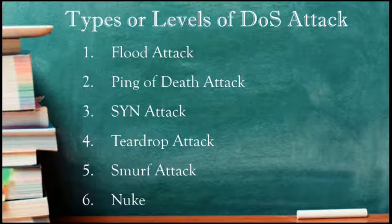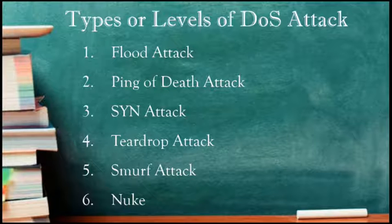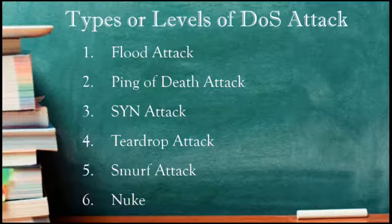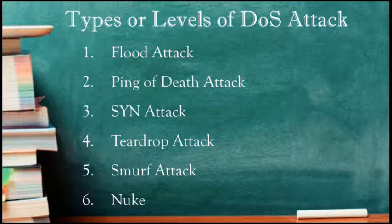The sixth type is the Nuke attack. Nuke is an old DOS attack against computer networks consisting of fragmented or otherwise invalid ICMP packets sent to the target. It is achieved by using a modified ping utility to repeatedly send this corrupted data, slowing down the affected computer until it comes to a complete stop.